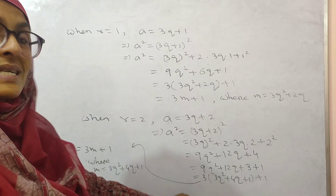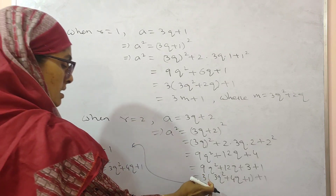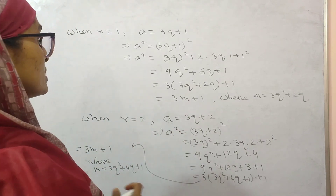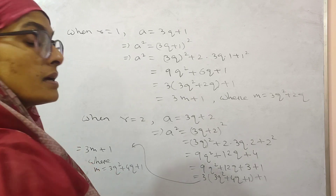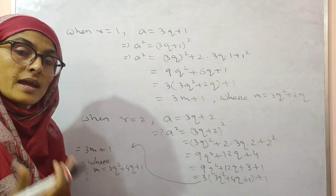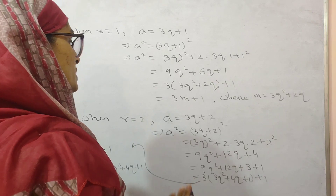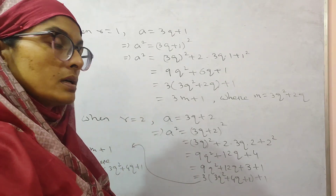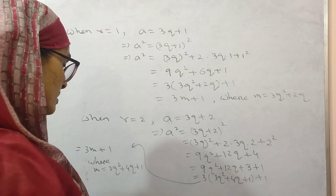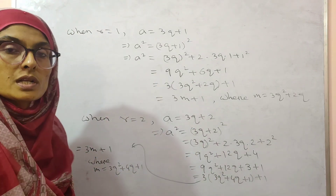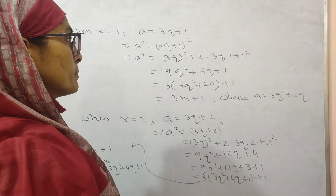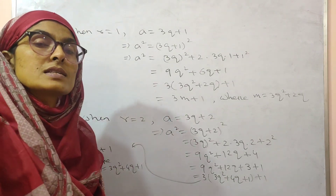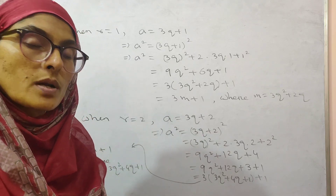So, you will write 3M plus 1. Therefore, the square of any positive integer is either of the form 3M or 3M plus 1. This is the proof of question number 4. I have already discussed question number 2 also. Next class, I will discuss the latter part of exercise 1.1.